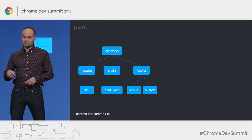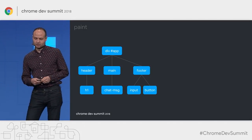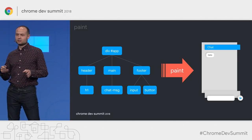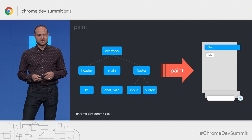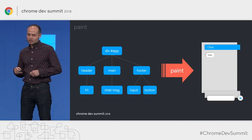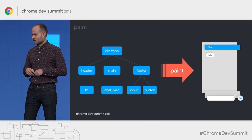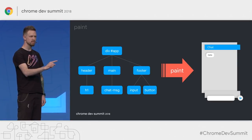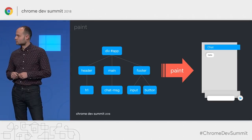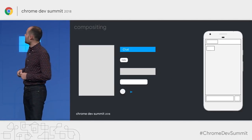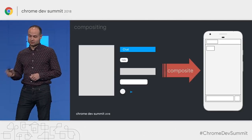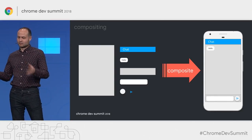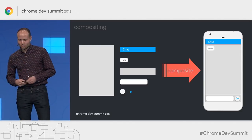The computed layout has enough information to break things up into pieces called paint layers. In the painting process, we walk through all the paint layers and convert the layout information into draw commands — these look a lot like the 2D Canvas API. Chrome takes these and sends them to its graphics layer called Skia, where they get rasterized and sent back as image representations. With the paint layers rasterized, the last step is to composite them: this step takes all the rasterized images and lays them on top of each other in order to produce the final page.